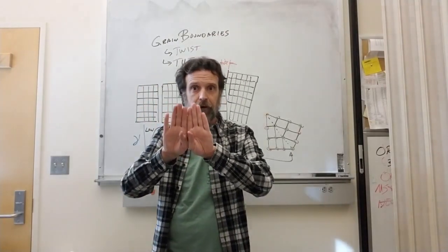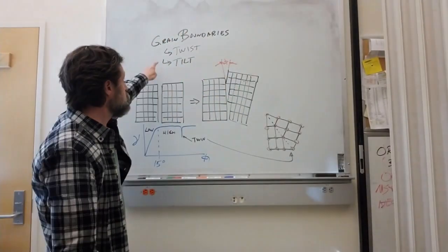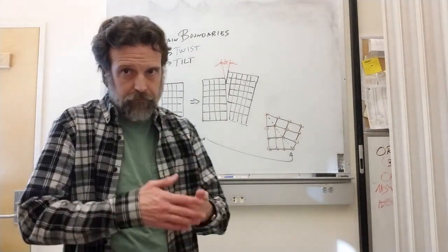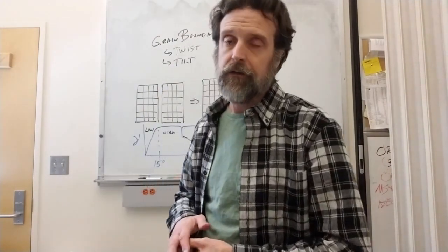However, if you change the orientation, there's two ways to do that. One way is you split it, twist them, and put them back together. That gives you a twist grain boundary, and we don't talk a lot about those in this class.